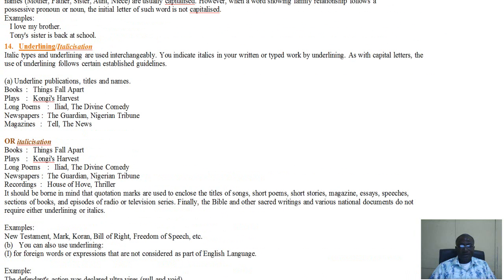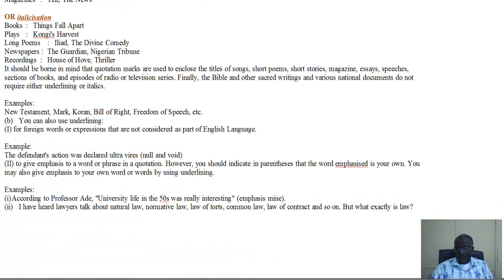Then you have underlining or italicization. Now this also looks like capitalization. And what is it that we underline or italicize? What we underline are publication titles and names. For instance, books: Things Fall Apart. You underline it to show that this is a book. You have The Divine Comedy, which is a long poem. You also underline that. We also italicize, for those who use a computer, the same. You can have Things Fall Apart and then you put it in italic. What is most important is to know that underlining or italicization all serve the same purpose, which is to underline, which is to emphasize.